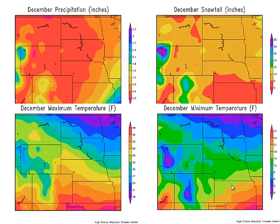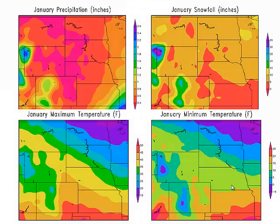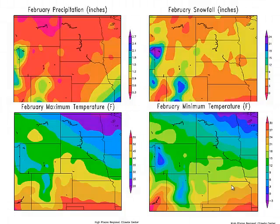In January, we're at about a half inch of precipitation for most parts of the state — it's all snow. We still get warmer temperatures out west compared to the east and southeast. Minimum temperatures kind of steady out a little bit across the state.